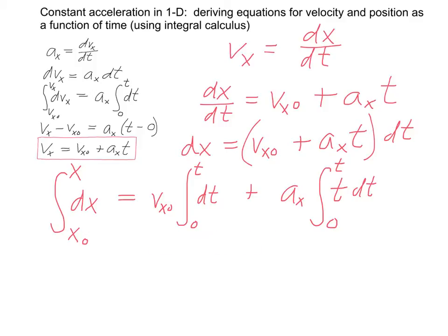On the right-hand side, we're integrating from the initial time, which we're going to call 0, to time t. On the left-hand side, we've got the corresponding limits. x sub 0 is the position at time 0. x is the position at time t.